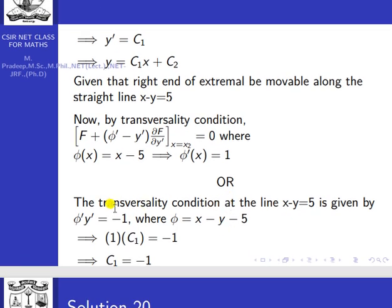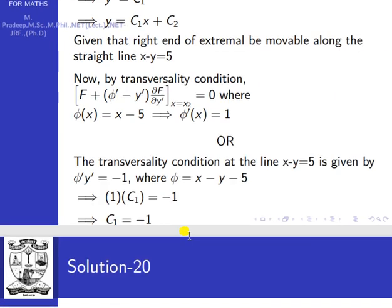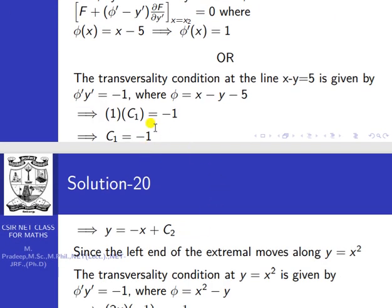Applying the transversality condition at x − y = 5, we have φ' · y' = −1, where φ'(x) = 1. Since y' = c₁, we get 1 · c₁ = −1, so c₁ = −1. Replacing in the extremal gives y = −x + c₂.